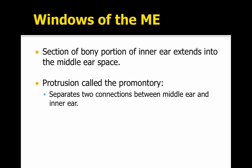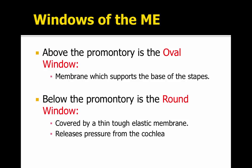There are two windows to the middle ear. A section of the bony portion of the inner ear extends into the middle ear space, and that protrusion is called the promontory. Above and below that are two windows. The top is the oval window, where the base of the stapes — the last of the middle ear bones, the ossicles — sits. Below the promontory sits the round window, which is covered by a thin, tough elastic membrane that helps to release pressure from the cochlea.